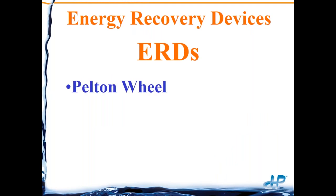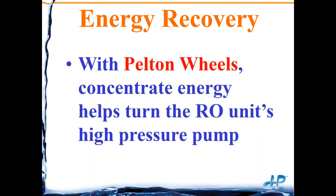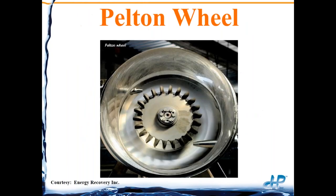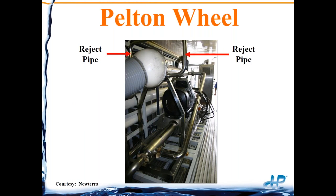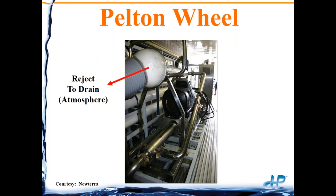There are three general categories: the Pelton wheel, the turbocharger, and positive displacement. With the Pelton wheel, the concentrate energy actually helps turn the RO unit's high pressure pump. Here's a picture — this shaft is coupled to the impeller of the high pressure pump. The reject brine pushes against these fins, which then helps turn the high pressure pump. Here's a small example with a clear housing where we can see the brine exiting. The reject goes against the fins, turns the shaft, and then goes to drain at atmospheric pressure.